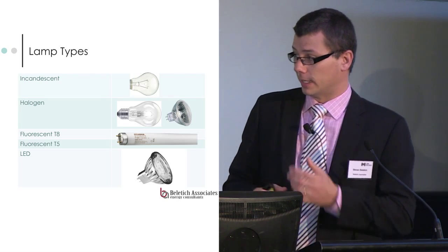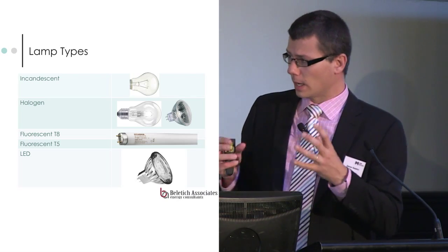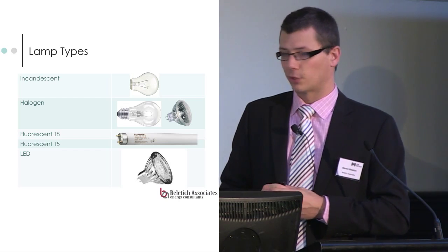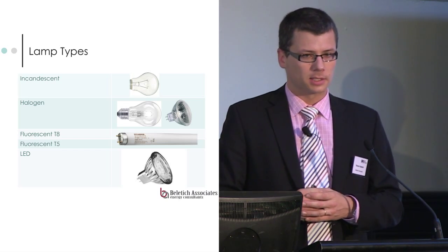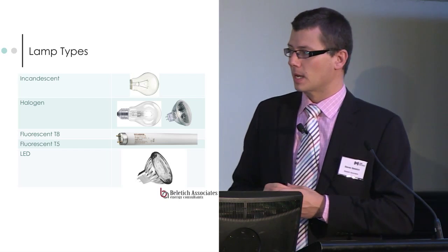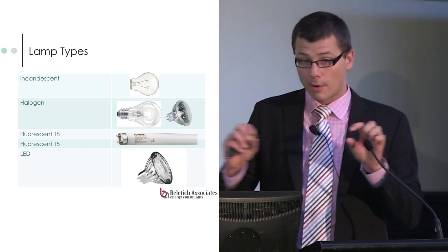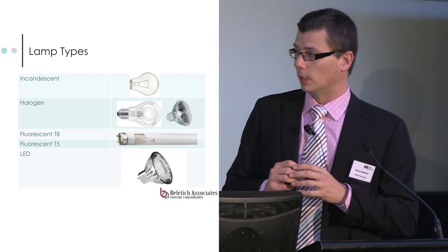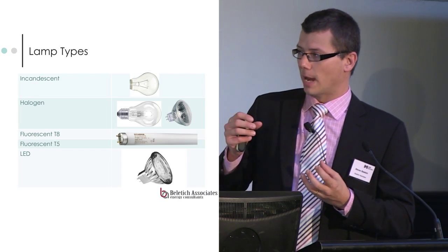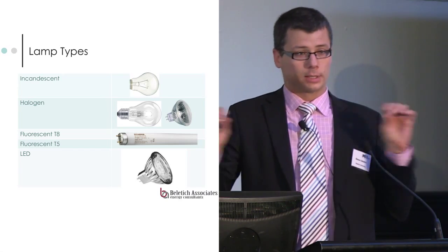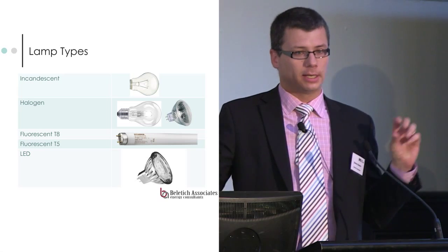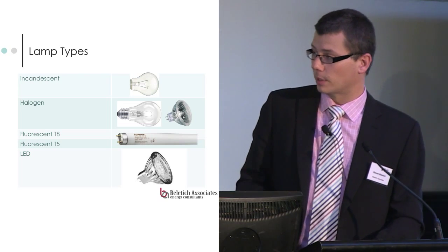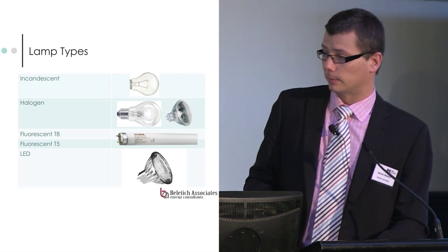The T5 is a fairly special type of lamp. It runs on an electronic ballast. It's narrower, which means that it will cause less of an obstruction in the light fitting for the light getting out. And there are a few other things which I'll expand on in a moment.